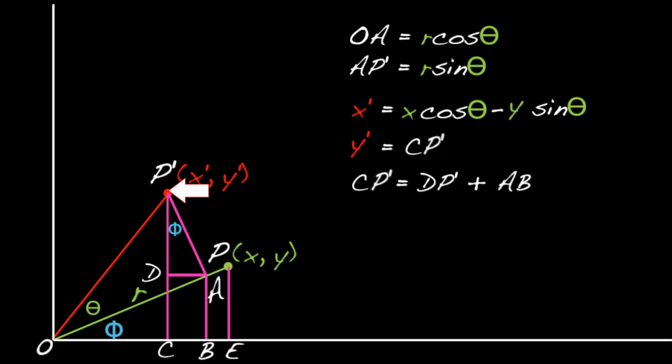DP prime is adjacent to phi. So, cosine phi equals DP prime over AP prime. But AP prime is R sine theta. So, cosine phi equals DP prime over R sine theta. And DP prime equals R sine theta times cosine phi, which equals X sine theta.